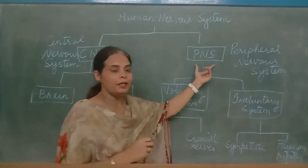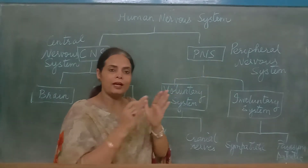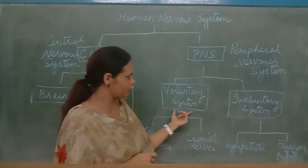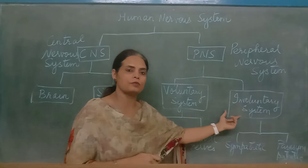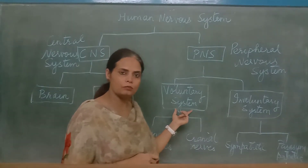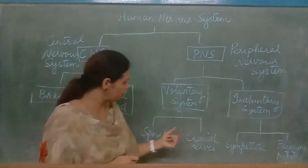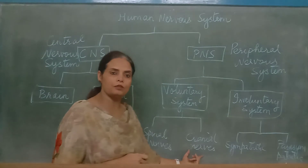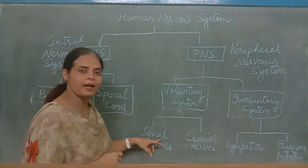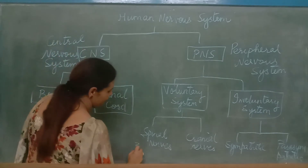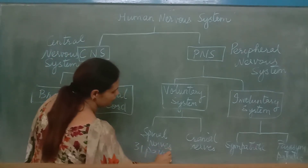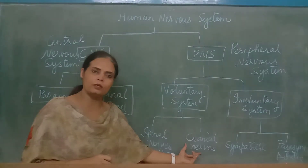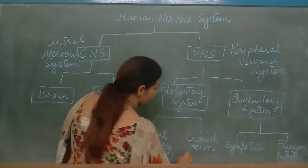The peripheral nervous system consists of the nervous system that is present away from the central line of the body. It is of two types: the voluntary system and the involuntary system. The voluntary nervous system consists of the spinal nerves and the cranial nerves. Spinal nerves arise from the spinal cord and there are 31 pairs. Cranial nerves arise from the brain and there are 12 pairs.